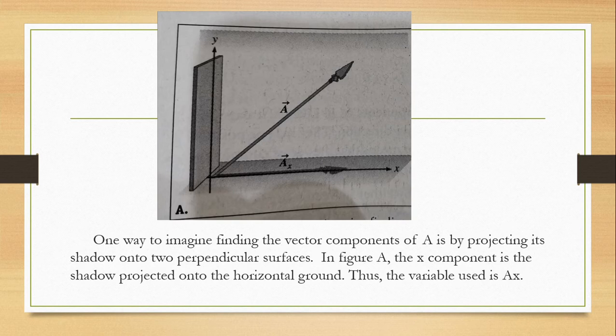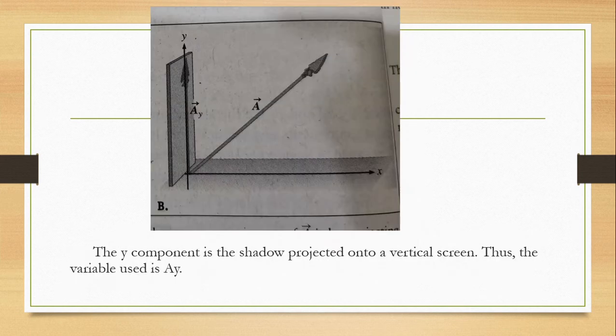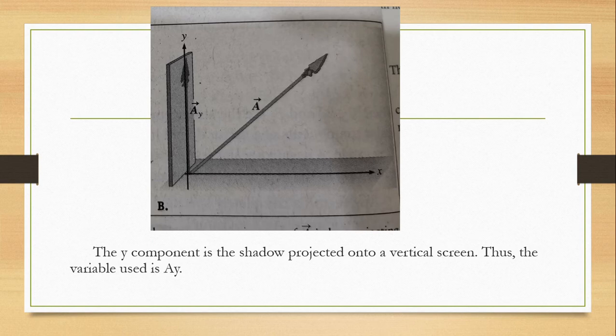You already know what a variable means from your mathematics — from algebra in junior high school. A variable can be changed; it is not permanent. You can assign whatever value you want to it. Then in figure B, the y component is the shadow projected onto the vertical screen, or the vertical y axis. Thus, the variable used is A sub y. So those are the components of vector A.